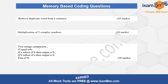The three 10-marker questions are quite easy. The first is to remove duplicate words from a sentence. The second is to multiply two complex numbers in the form x + iy, where i is the iota sign, involving both the real and imaginary parts — this is a more scientific calculation. The third question gives you two strings and asks you to compare them based on subsets: whether a equals b, whether a is a subset of b, whether b is a subset of a, or whether they are not equal at all. You must check all these conditions before outputting your comparison result.